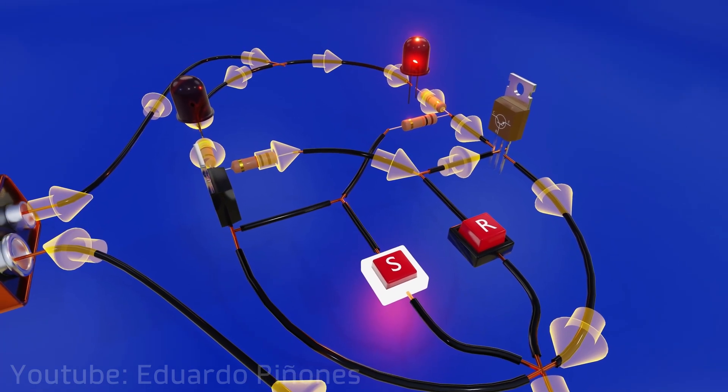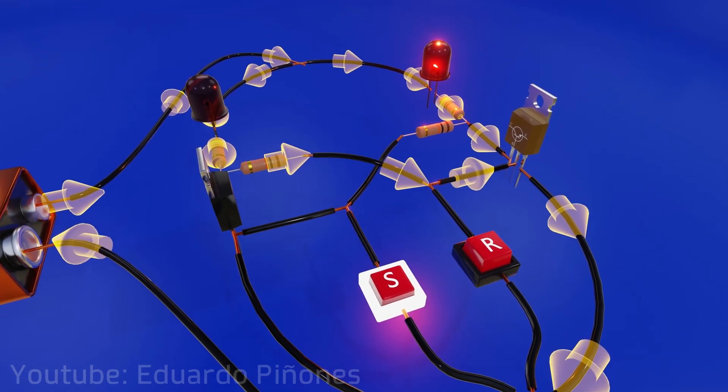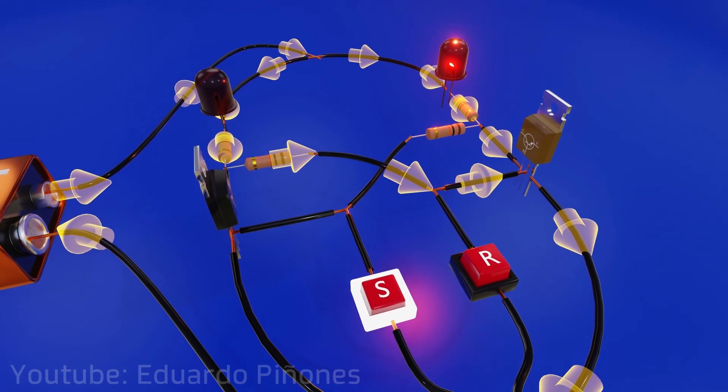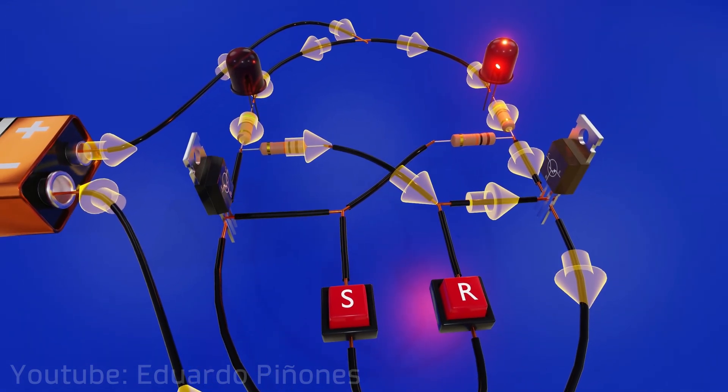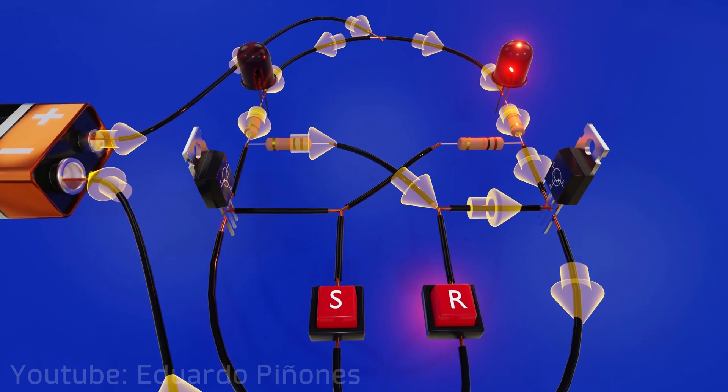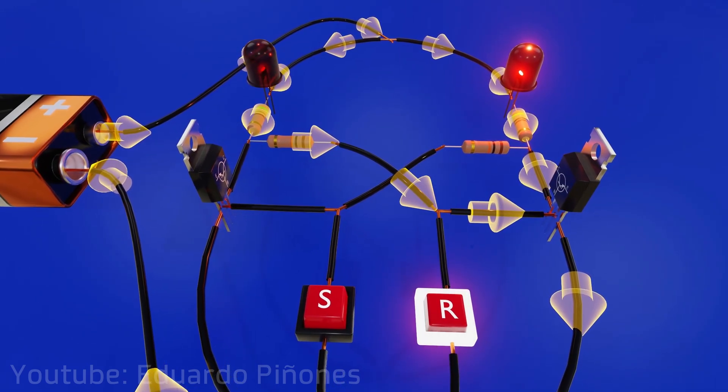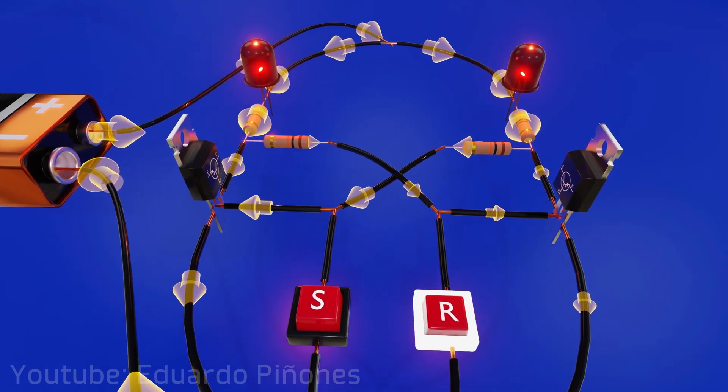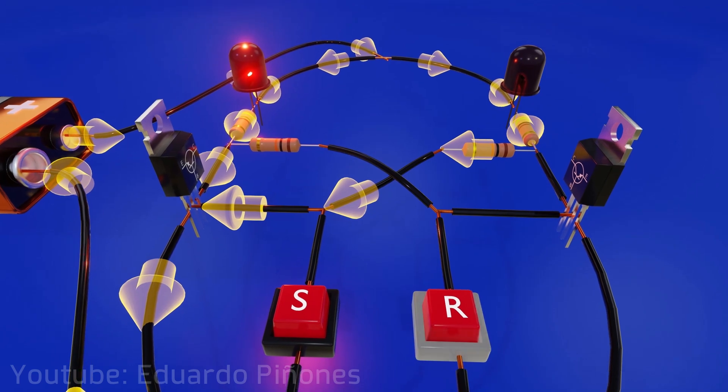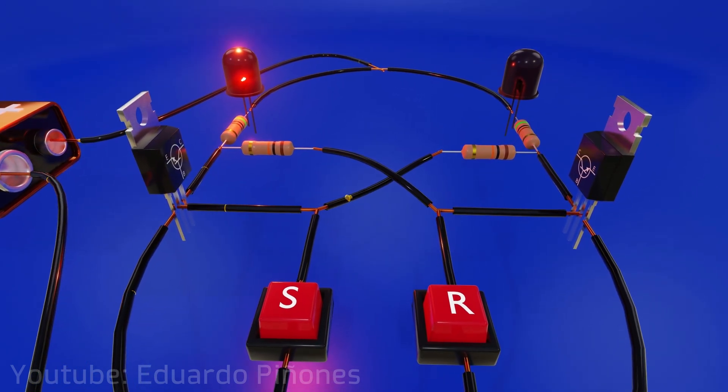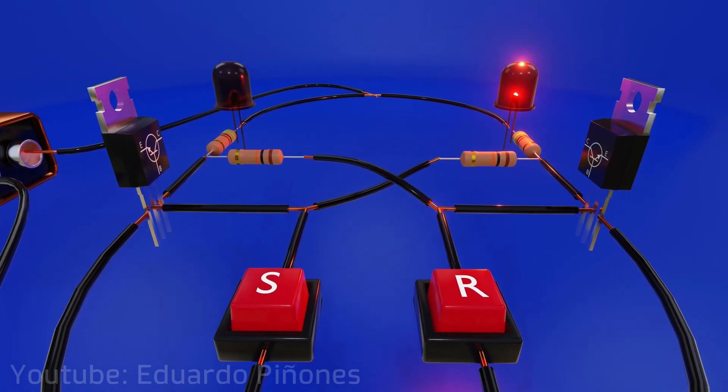As you will notice, once all this happens, the current will no longer pass through the button that was being pressed, which means that even if we release them, or in other words, stop sending a signal, the state of the circuit will not change and will retain the information. This time, when we press the reset button, since the circuit has a symmetrical shape, the whole process will be repeated and the opposite side will light up again. And so we can continue to change the state of the circuit every time we press a button other than the one that changed the state of the circuit before.